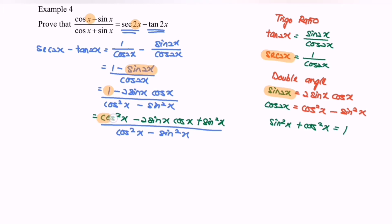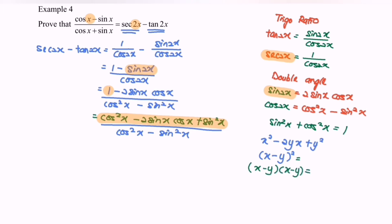Now I'm going to factorize the numerator. Let cos x = x and sin x = y, so the numerator is x² - 2xy + y², which factorizes as (x - y)². Expanding confirms: (x - y)(x - y) = x² - 2xy + y². So the numerator factors to (cos x - sin x)².